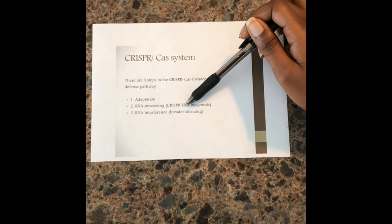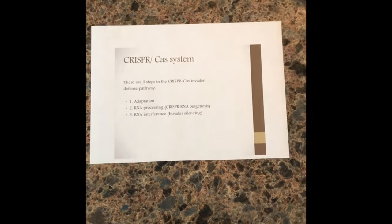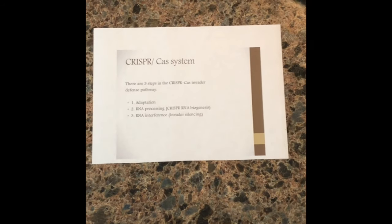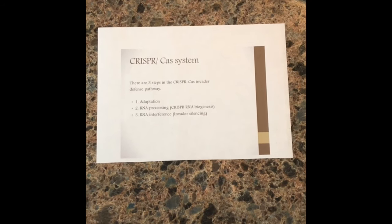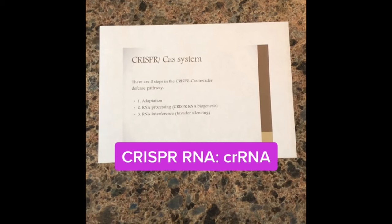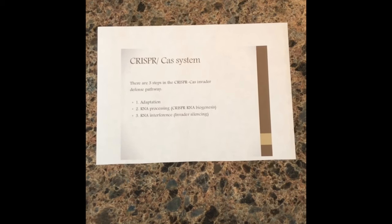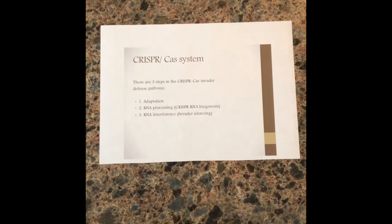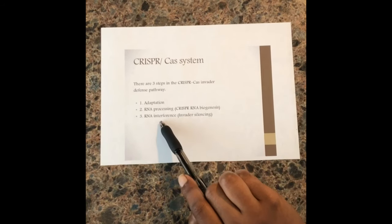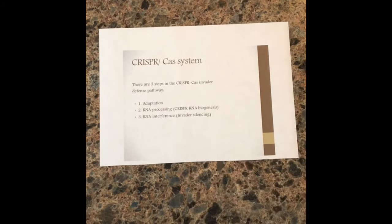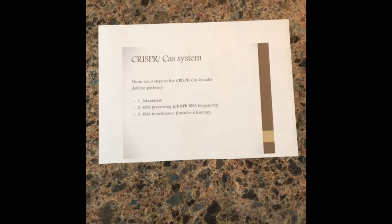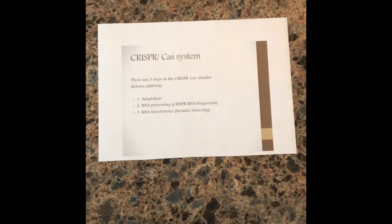The second step is RNA processing. Here the host transcribes and processes CRISPR loci to generate mature CRISPR RNA containing both CRISPR repeat elements and the integrated spacer element. The last step is RNA interference. crRNA detects foreign DNA and forms a complex with the foreign DNA.